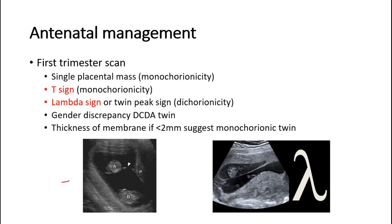If there are two separated placental masses, it suggests dichorionicity. If there is a single placental mass, it is monochorionicity. A T-sign suggests monochorionic, whereas a lambda sign suggests dichorionic. If there is a gender discrepancy — one male and one female — it suggests dichorionic diamniotic (DCDA) twins. A separating membrane thickness of less than 2mm also suggests a monochorionic twin. We can label each fetus according to right and left, or upper and lower.